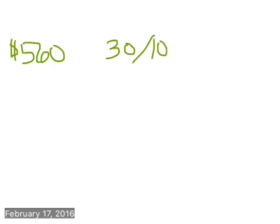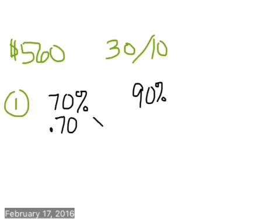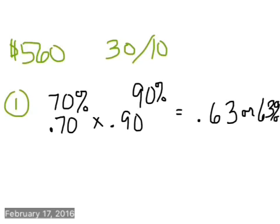So number one says find the net price rate, and the problem says the list price is $560, and it's 30% less 10%. Remember, that's how I can write that also. So for number one, to find the net price rate, the complement of 30 is 70, and the complement of 10 is 90%. And what I'm going to do is I'm going to take 0.7 times 0.9. Those are my complements of those two particular things. So when I get that, I get 0.63 or 63%, and that's what I get.